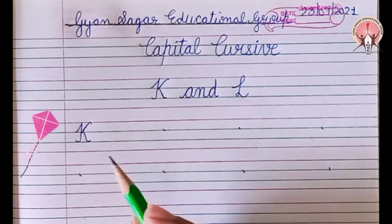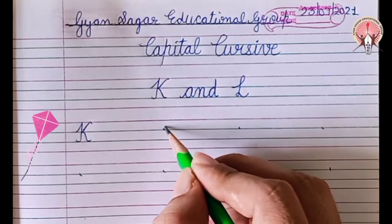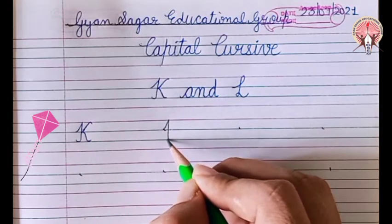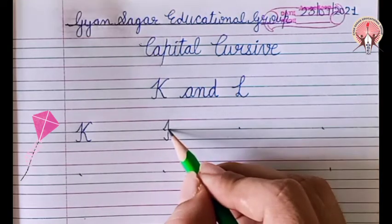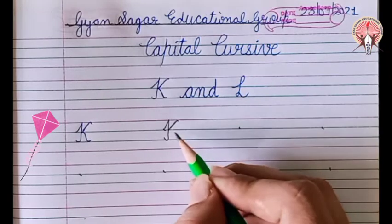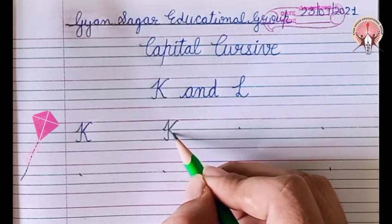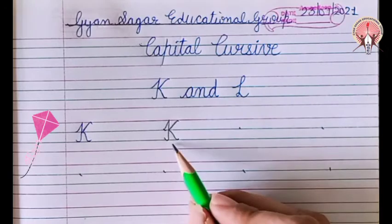How to write K? Start from the dot. Go up. Come down. Make a small curve. Now come to the middle. Go upwards. Now again come to the middle. Go downwards. Capital cursive K.